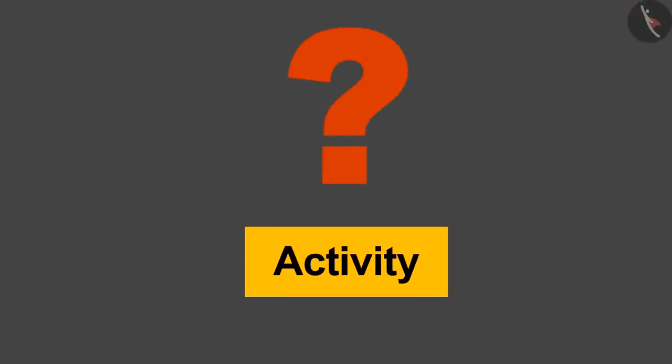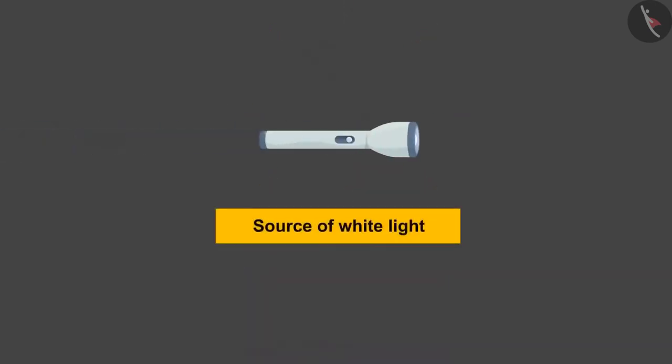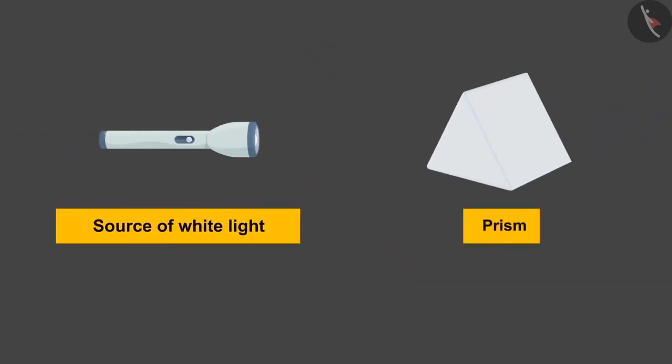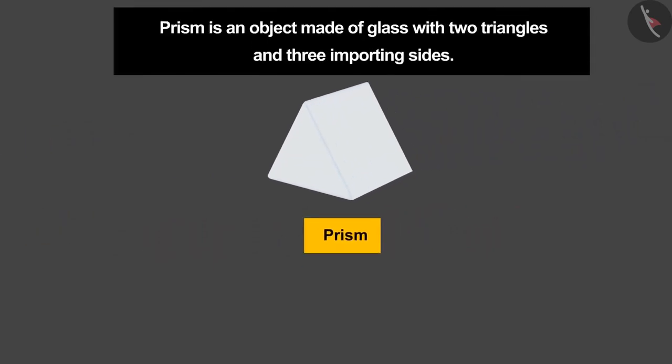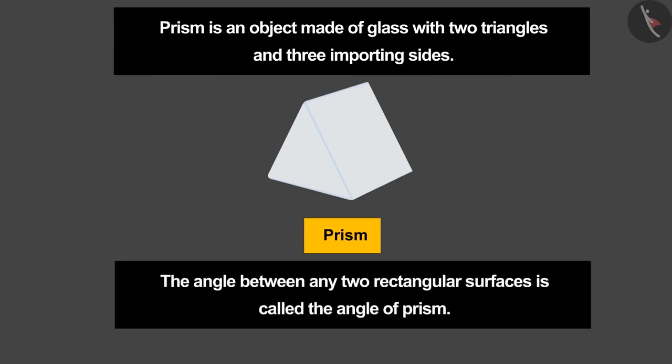To find the answer to the first question, let's do this activity. To do this activity we need a source of white light and a prism. Prism is an object made up of glass with two triangles and three rectangular sides. The angle between any two rectangular surfaces is called the angle of prism.